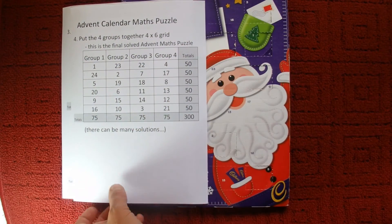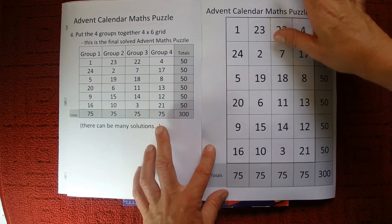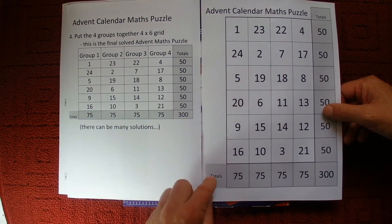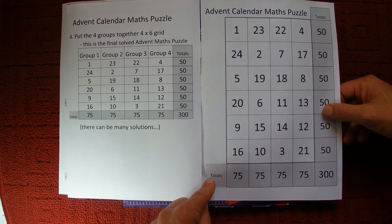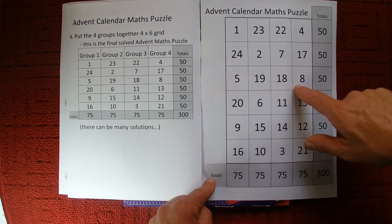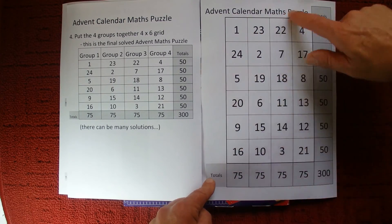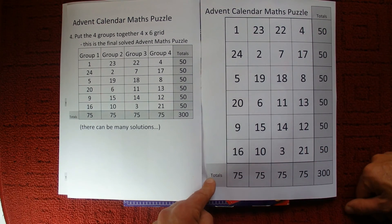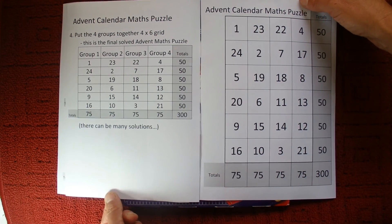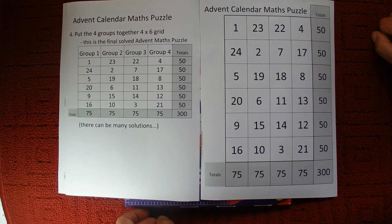To finish off, I've copied that solution back into the big grid we started looking at at the beginning of the video. That shows you that all the rows equal 50 and all the columns equal 75. I hope you've enjoyed this video — thanks for watching, and goodbye for now.